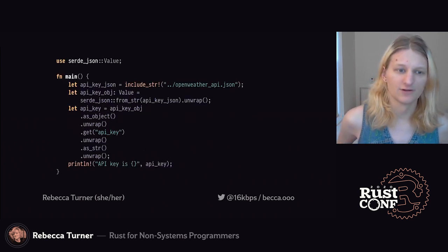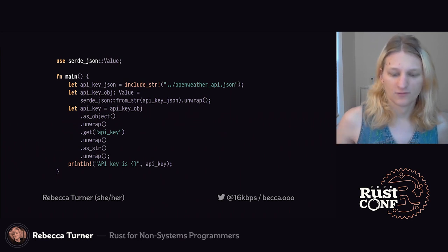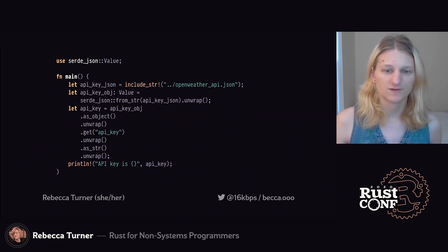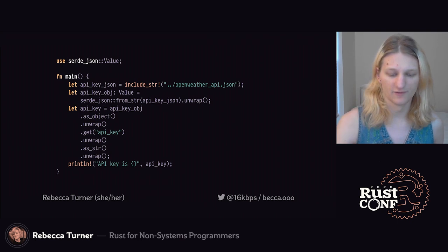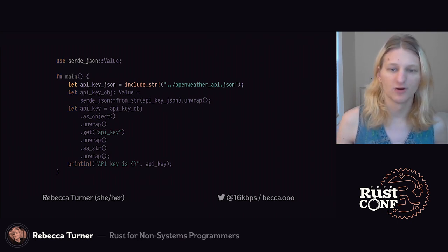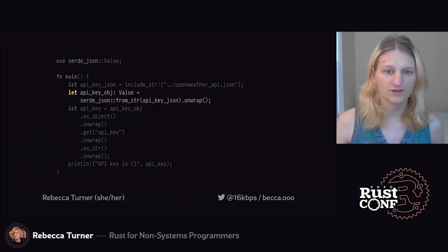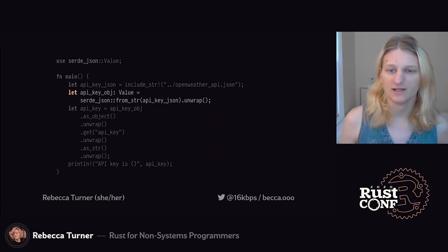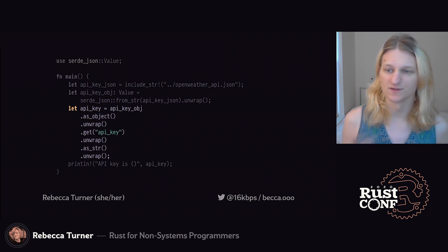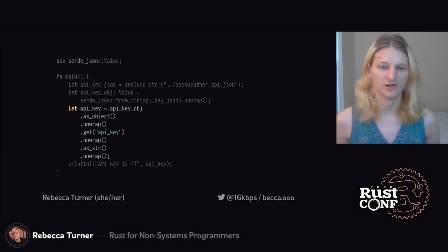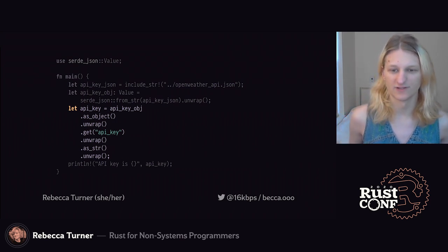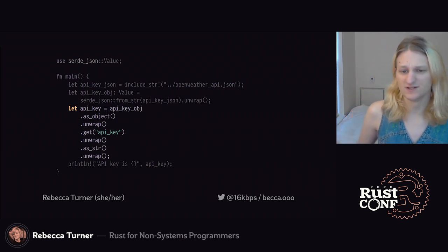Here's a start at a line-by-line conversion of that program. First, we're using the include_str! macro, which actually reads a file as UTF-8 at compile time. We'll work on opening files in a bit, but this works well enough for now. Next, we're going to use the serde_json crate to parse that string into a JSON value, and then we get the API key out of the object as a string. Each time we assert something about the type of a value in this object, we need to unwrap it, because we might not have a value of the type we want.